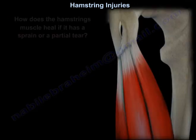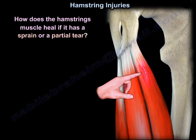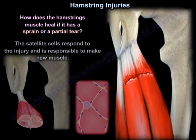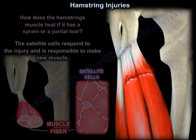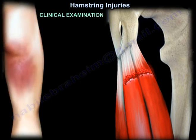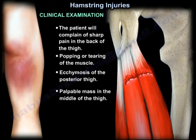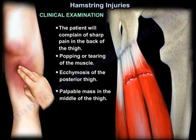If the muscle is sprained or has a partial tear, satellite cells respond to the injury and are responsible for making new muscle fibers. On clinical examination, the patient will complain of sharp pain in the back of the thigh, a popping or tearing sensation, ecchymosis of the posterior thigh, and a palpable mass in the middle of the thigh. The injury is usually diagnosed by MRI.